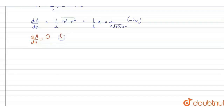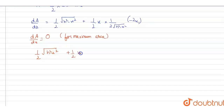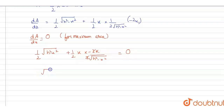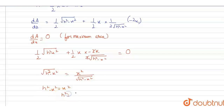For maximizing area, we set dA by dX equal to 0. So: under root of H squared minus X squared minus X squared upon under root of H squared minus X squared equals 0. This gives H squared minus X squared minus X squared equals 0, so H squared equals 2X squared, therefore X equals H by root of 2.